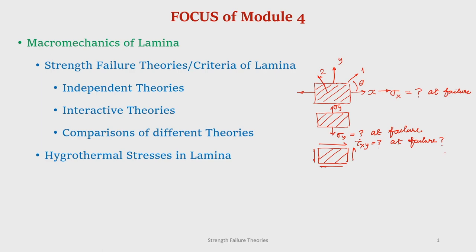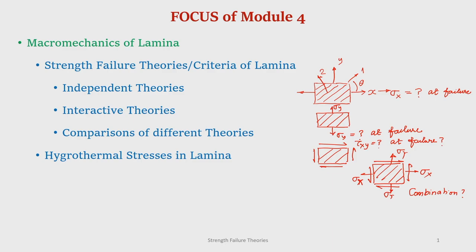This is what exactly is the strength of a lamina. It could also be that it may not always be a single stress — it could be all these stresses acting together, combined stresses. What combination of these stresses leads to failure? This is what we mean by the strength of a lamina: we need to know the maximum stress — a single stress or a combination of stresses — it can actually withstand before it fails.